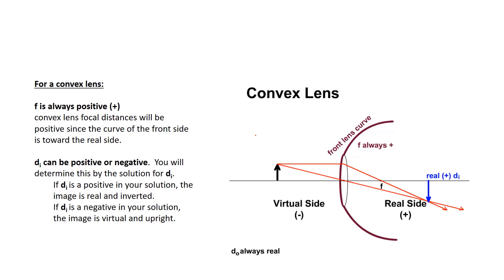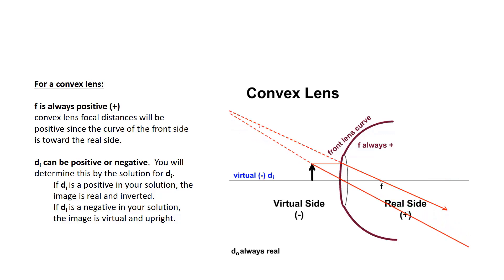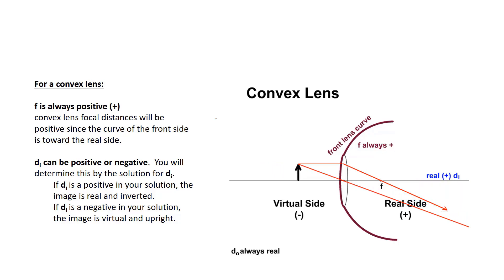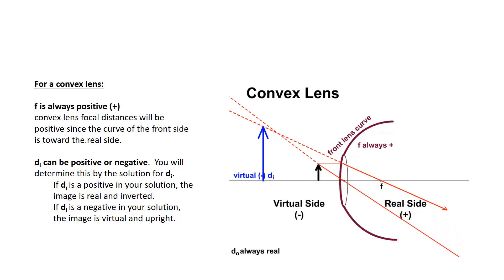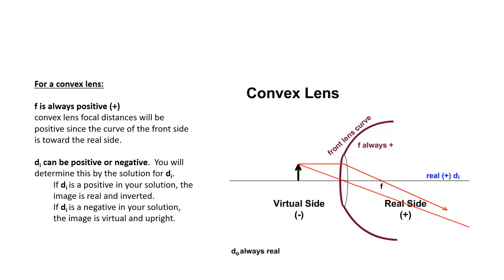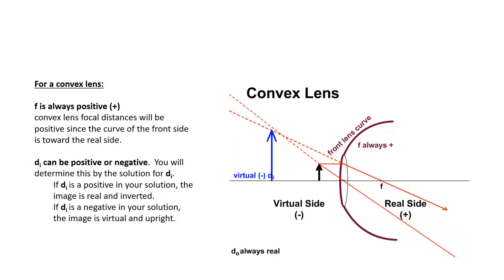For convex lenses, images can be real or virtual — they can show up on either side. But the lens itself curves toward the real side, so F is always positive with a convex lens. DI can be positive or negative depending on how the scenario is set up. These ray diagrams show what the math does anyway, but the math gives a more precise answer — ray diagrams might be slightly off if not drawn to scale.